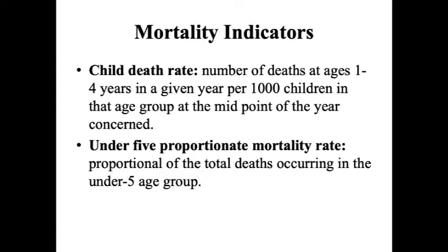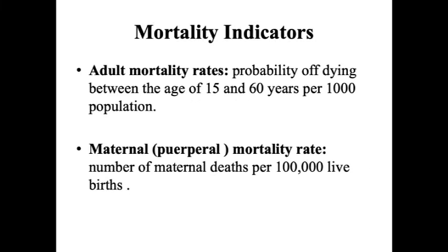Under-5 proportional mortality rate is the proportion of total deaths occurring in the under-5 age group — for example, out of 100 total deaths including adults, how many are in the under-5 age group. Adult mortality rate is the probability of dying between the ages of 15 and 60 years per 1000 population.